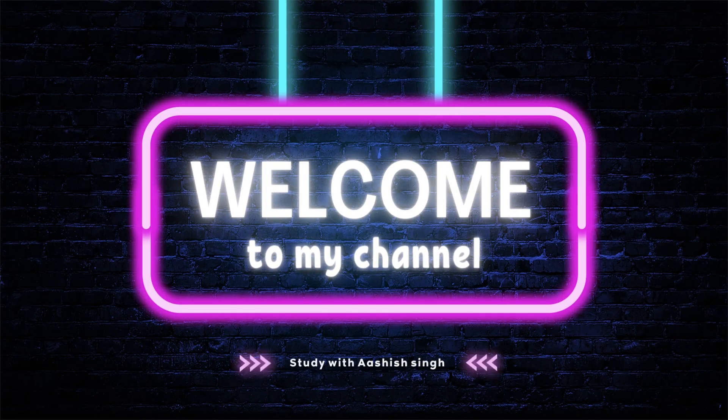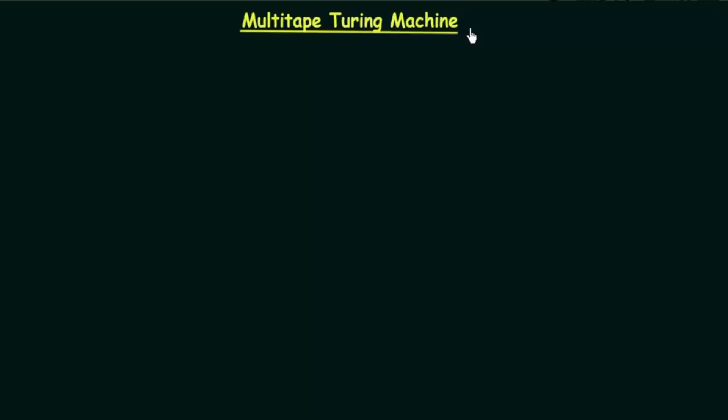Welcome, everybody! In the previous lectures, we have been studying about Turing Machines. We have seen many examples of Turing Machines and we have also seen how they actually work. Now, if you have noticed, so far in all the Turing Machines that we have discussed, they have just a single tape. We know that Turing Machines have a tape, and we already know what the function of the tape is.